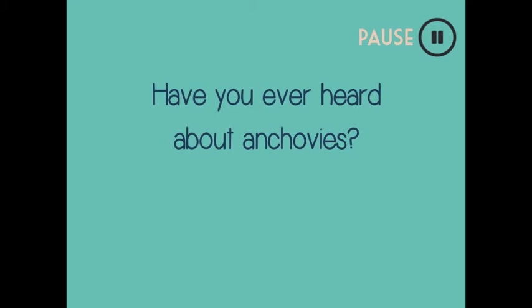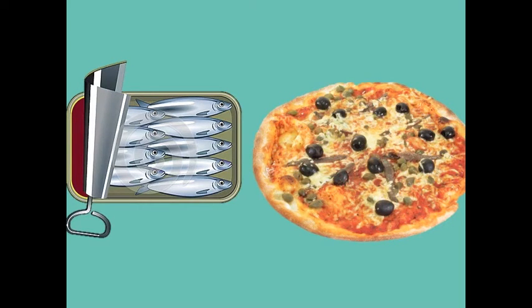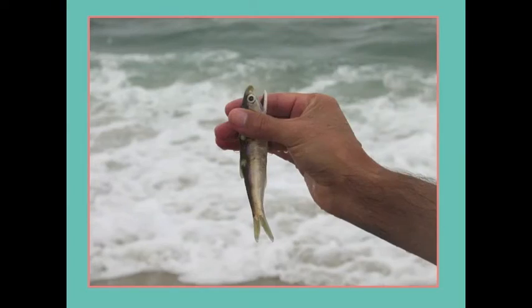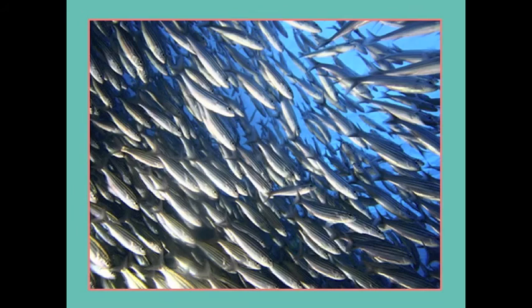Have you ever heard about anchovies? You have probably seen anchovies in a can, on a pizza, or maybe on TV. The anchovy is a small fish that lives in the Southeast Pacific and feeds on plankton. Although it is a small fish, the anchovy is the most abundant fish in the Peruvian Sea. They live in very large schools of several million individuals.